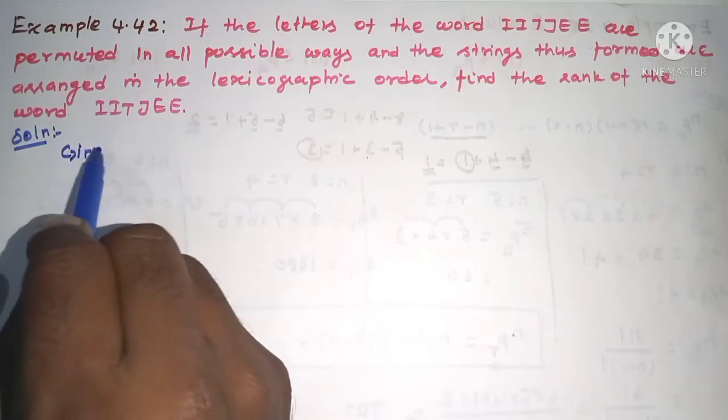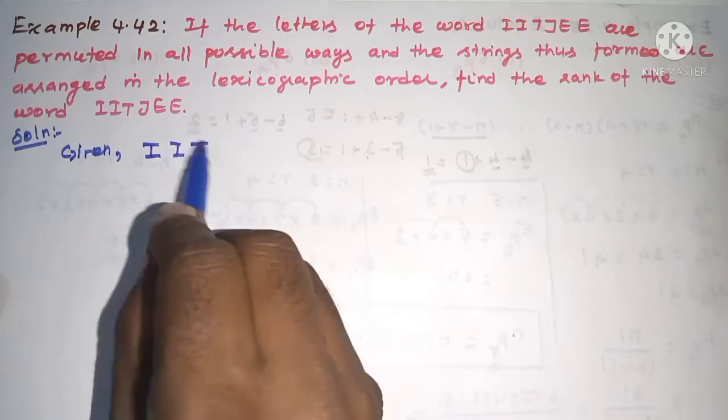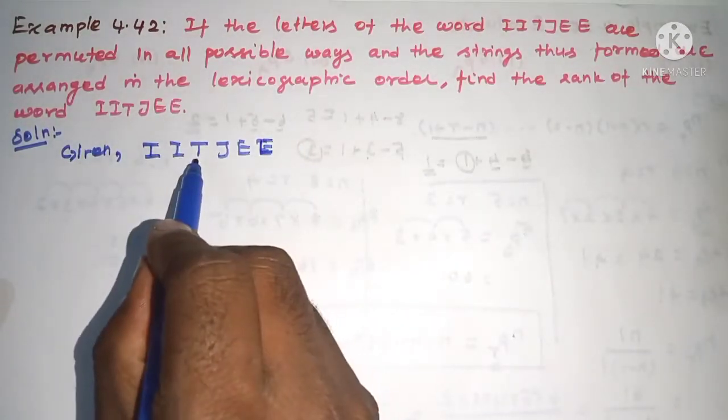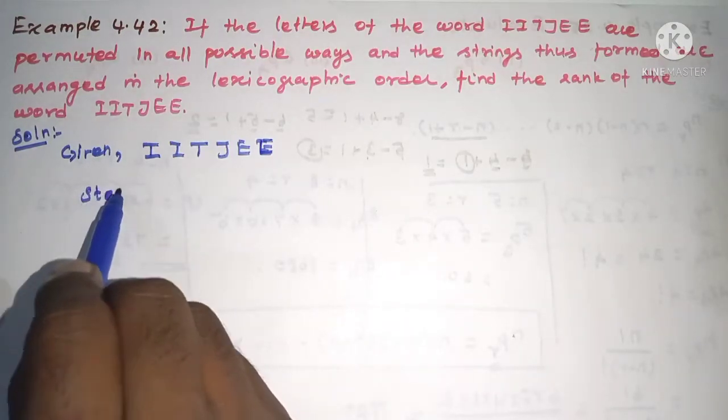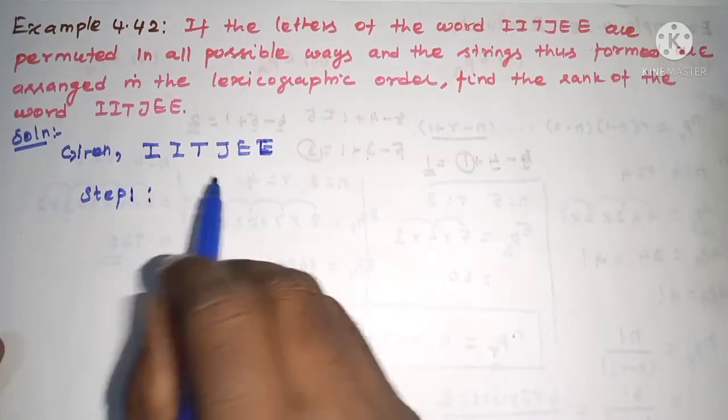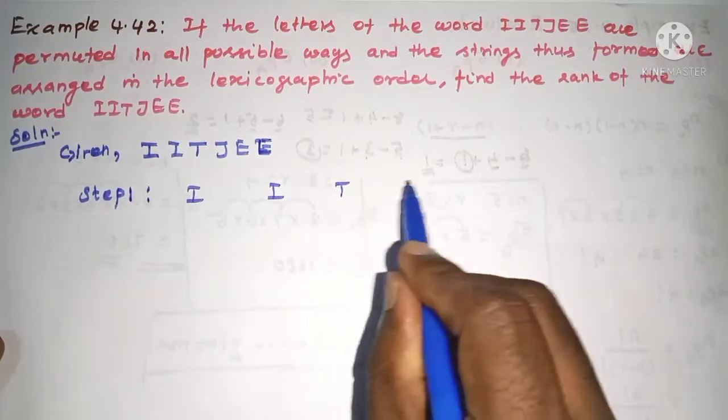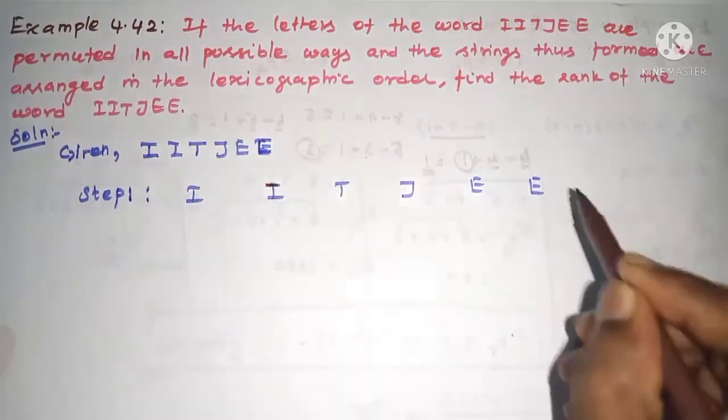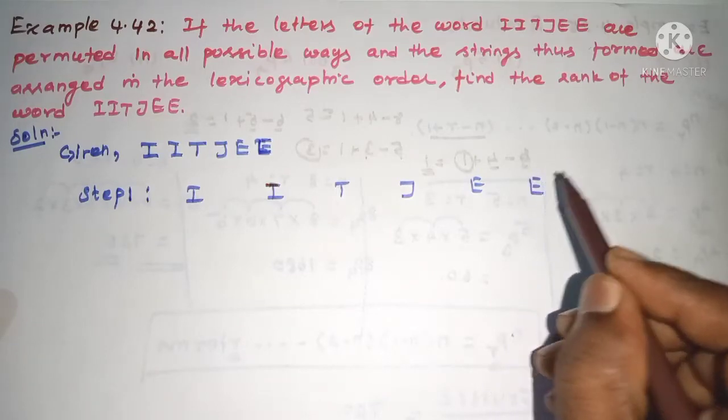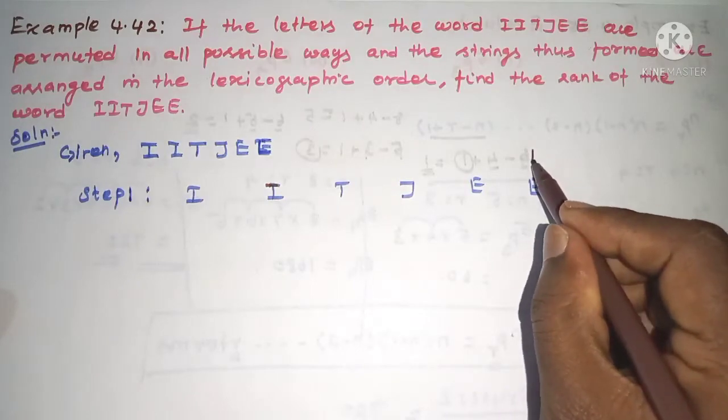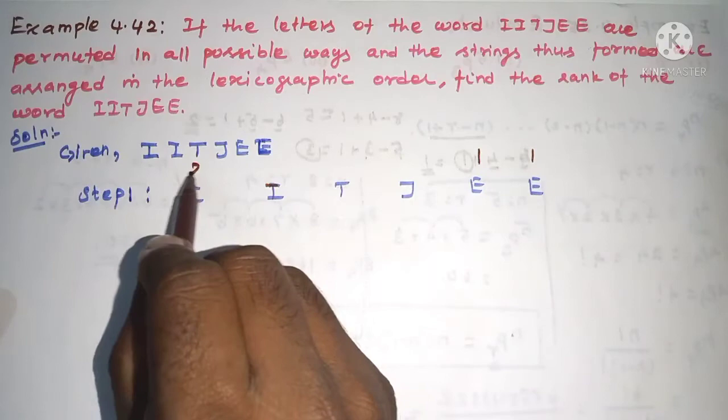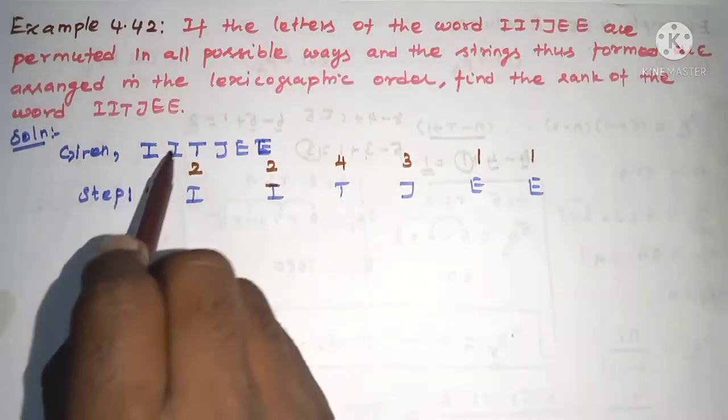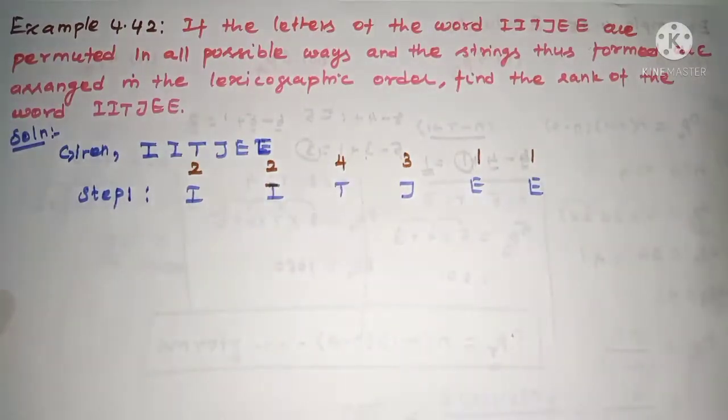Given IITJEE. Now we solve Step 1 and Step 2. First part in Step 1: Write IITJEE. The letters are I, I, T, J, E, E. In alphabetical order: E, I, J, T. So first E is 1, I is 2, J is 3, and T is 4. This completes the first step. Step 2.